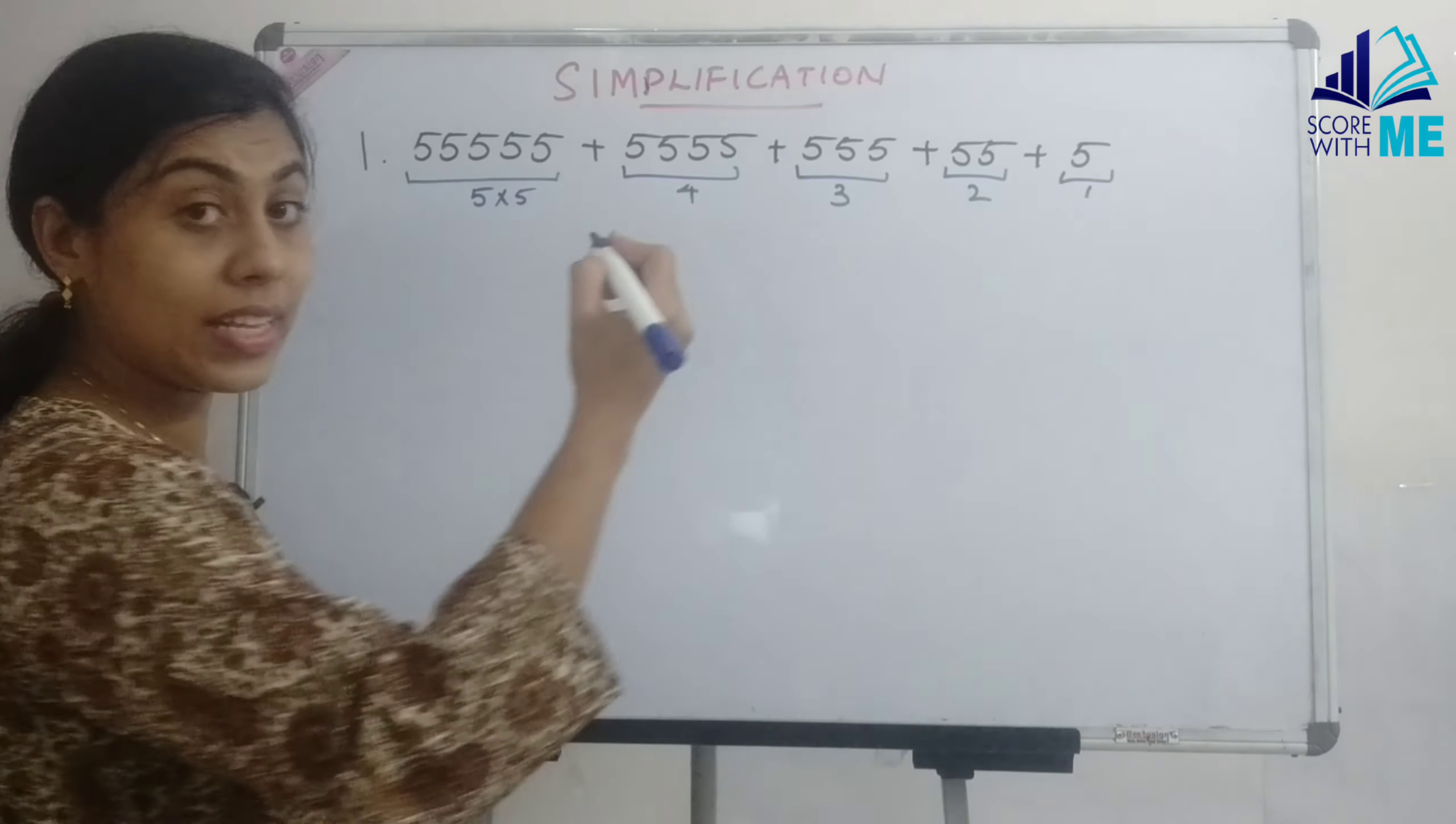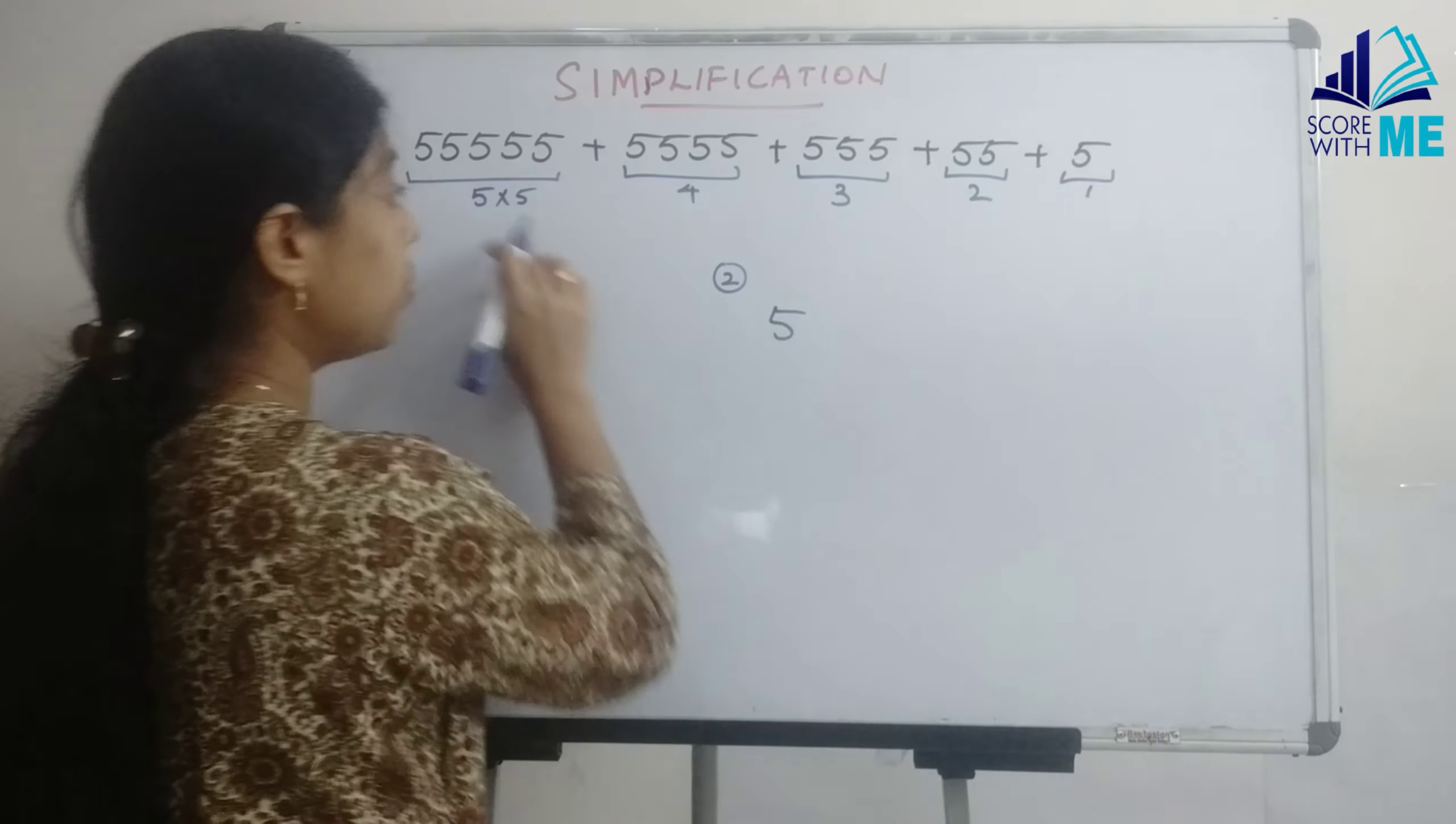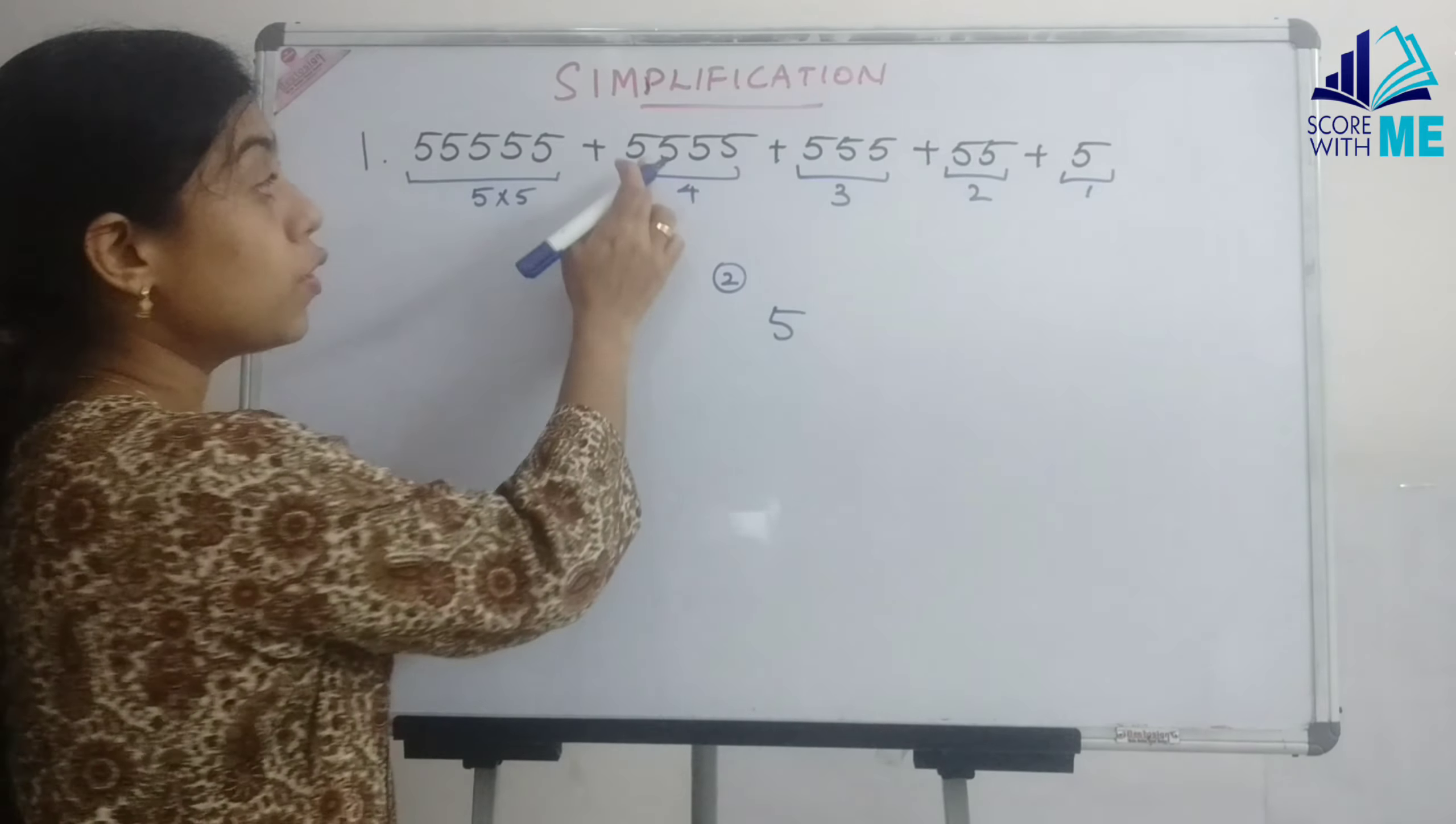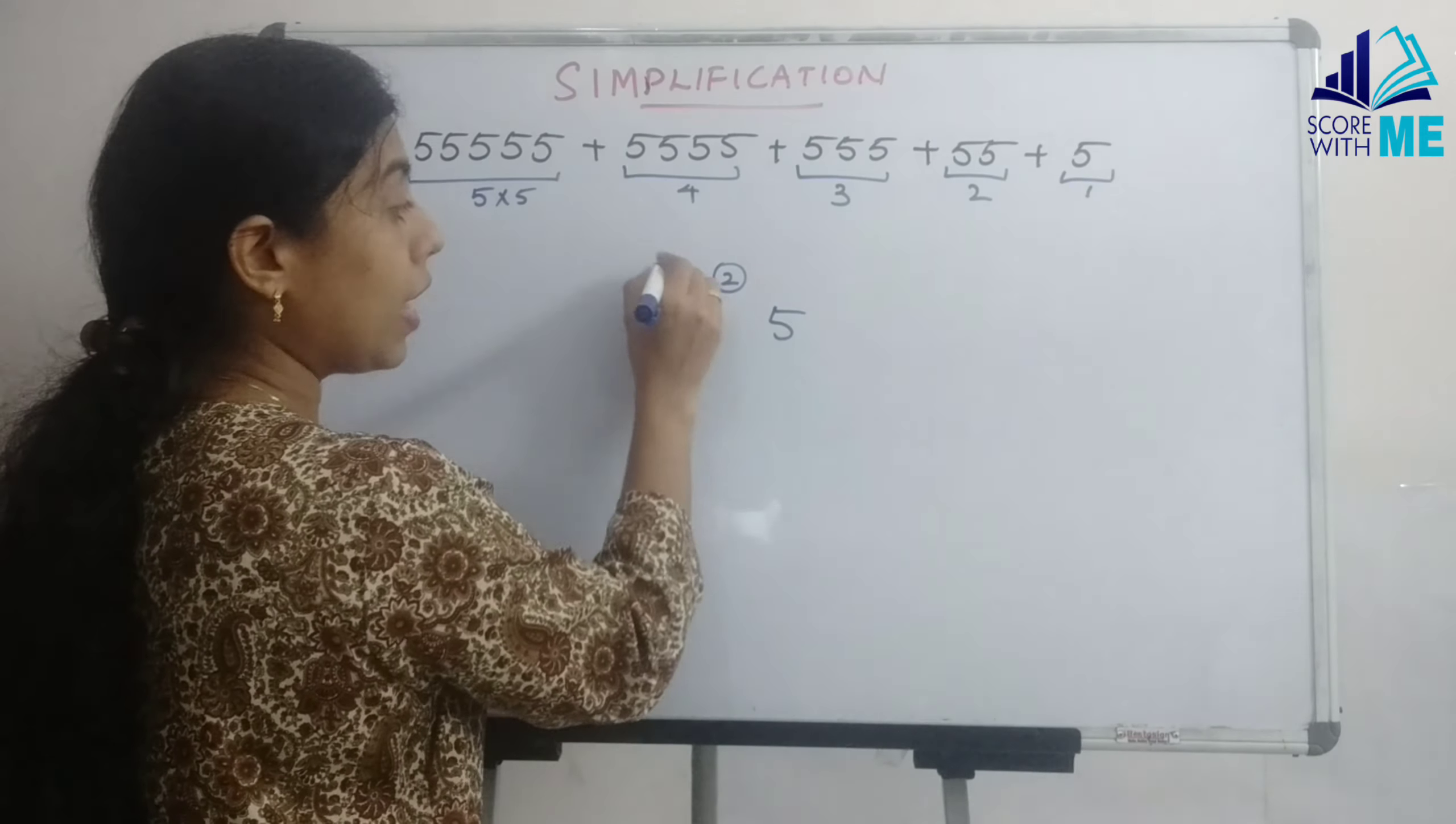So our first digit in the sum place is going to be 5 and a carry 2 from 25. Next we are going to multiply this common digit 5 with 4 number of 5. So 5 into 4 will give you 20. Here we already have a carry, so we get 22.